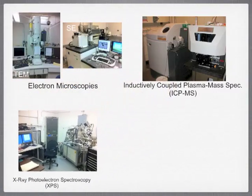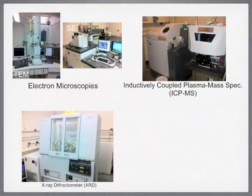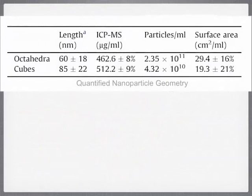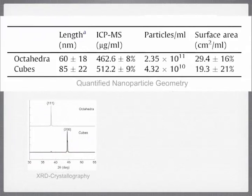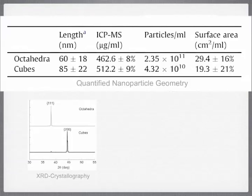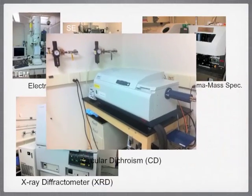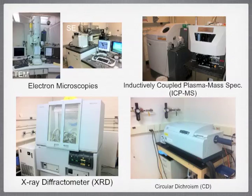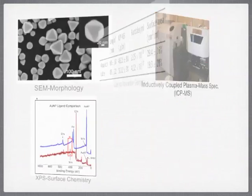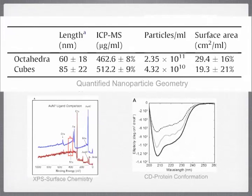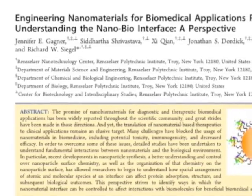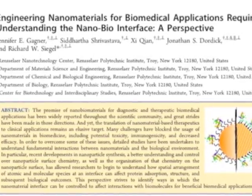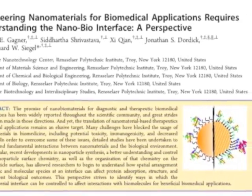Moreover, we also used X-ray photoelectron spectroscopy and X-ray diffractometry to characterize the surface chemistry and crystallography of nanoparticles respectively, so as to further ensure the other features of nanoparticles are also under our control. In this way, when we did the subsequent characterizations on protein-nanoparticle conjugates, we were fully clear about what factors are influencing the adsorbed protein behaviors, and thus made our quantitative analysis not only possible, but also reliable. The details of our quantitative analysis are presented in our recent review paper for the JPCL perspective.